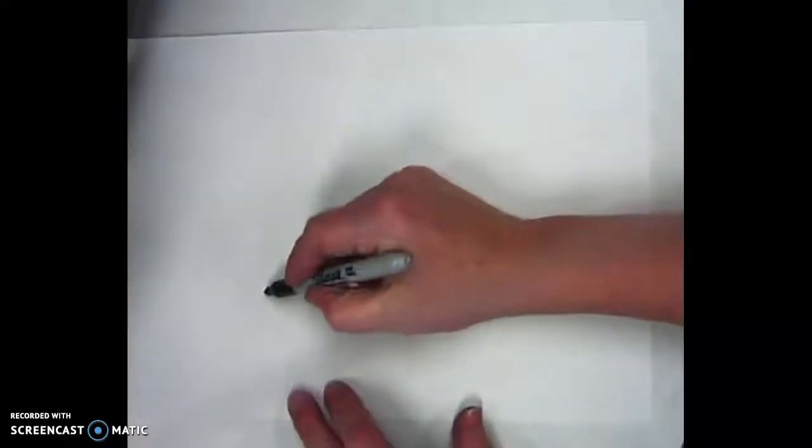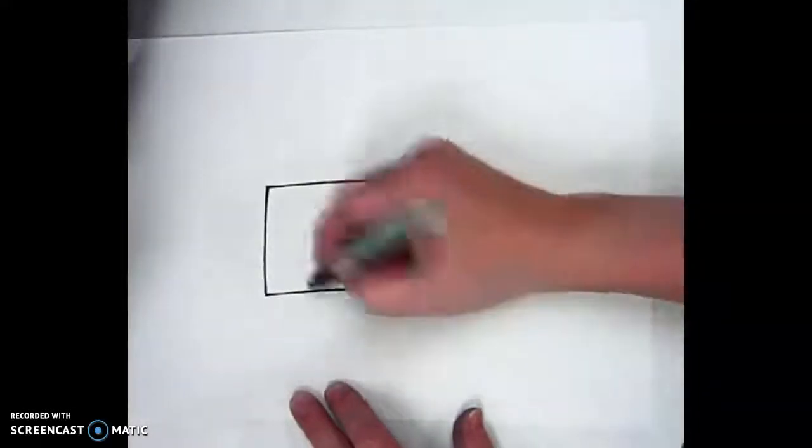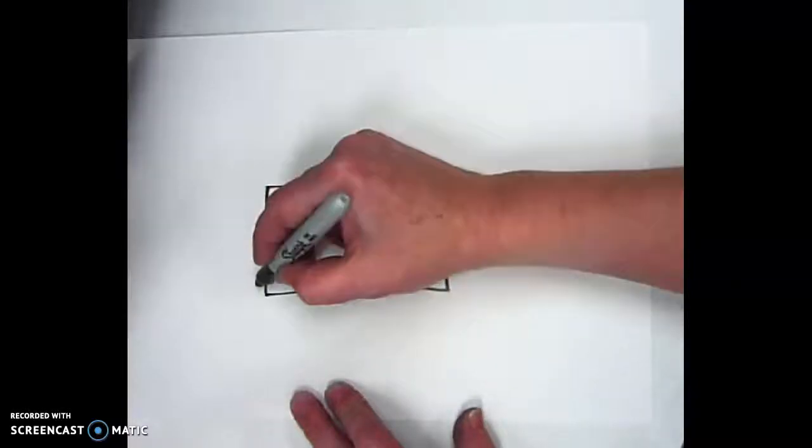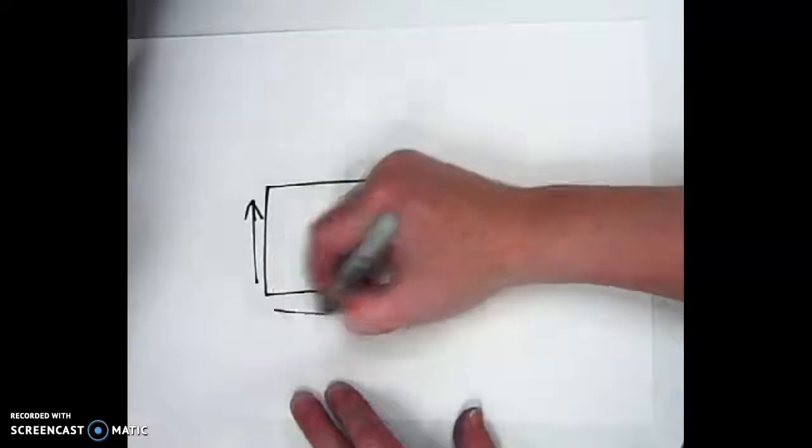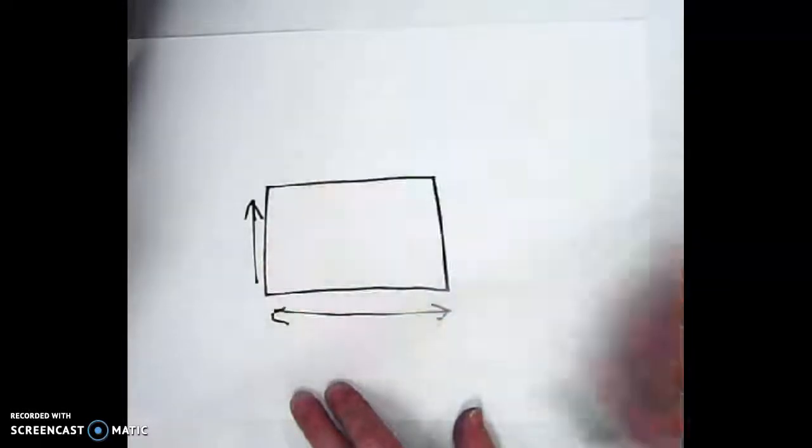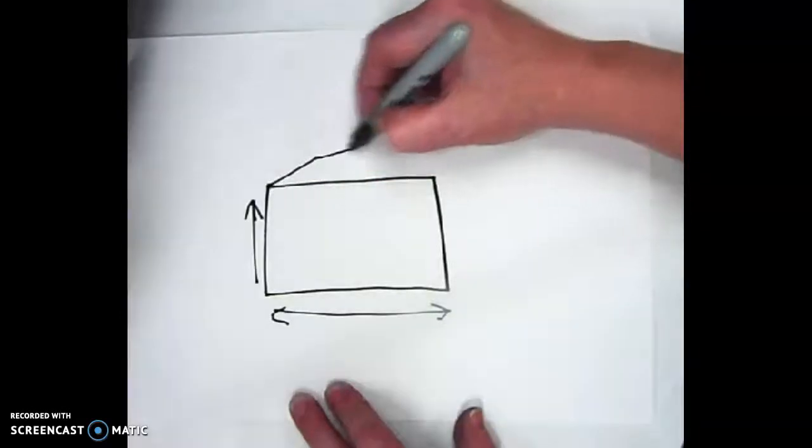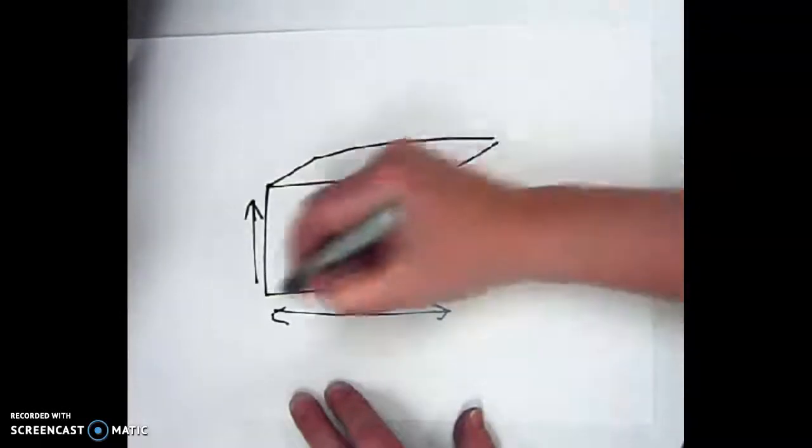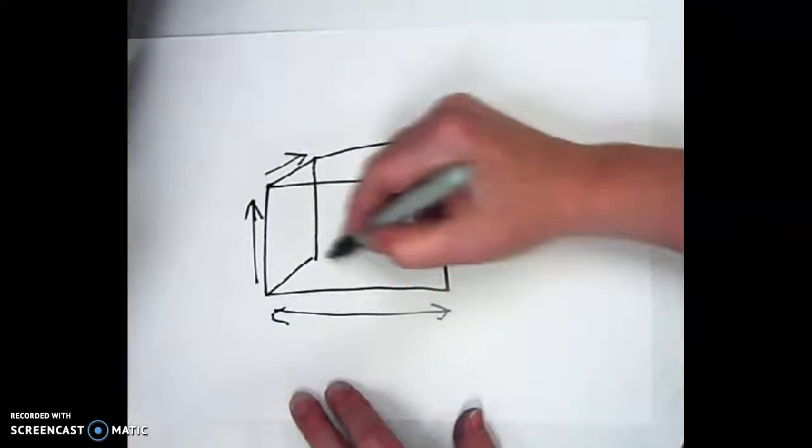So, for example, let's say we have a rectangle. So this has height right here, and it's got width, which is this part here. But in order for something to be 3D, it also has to have depth, which is this part right here.